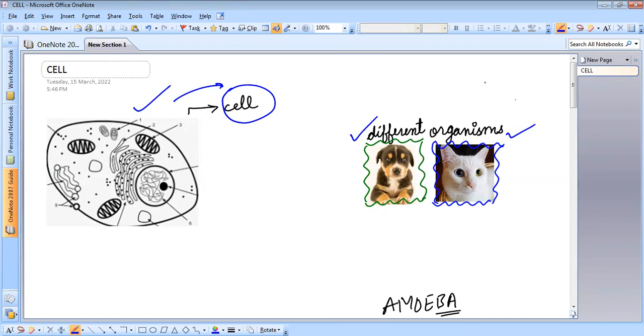The bodies of living organisms are made up of these microscopic units called cells. These are measured in microns and they cannot be seen with naked eyes because they are microscopic. So we view cells with the help of microscopes.